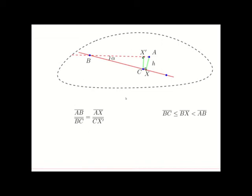But from the picture, we know that BC is smaller or equal at most to the distance BX. Furthermore, BX is smaller than the distance AB. This is because AB is the largest edge in the triangle AXB. This is because it's looking at the right angle.